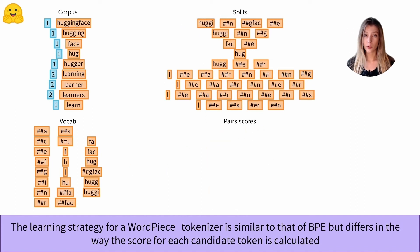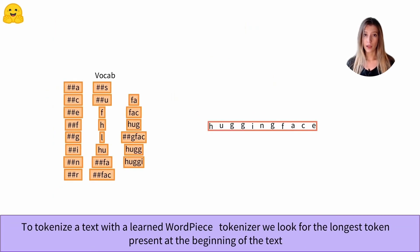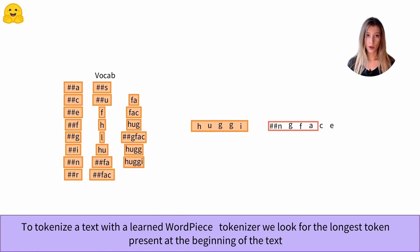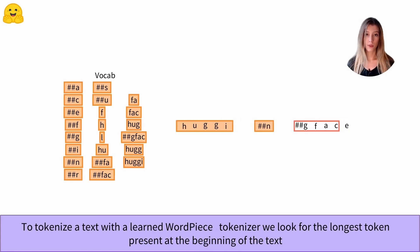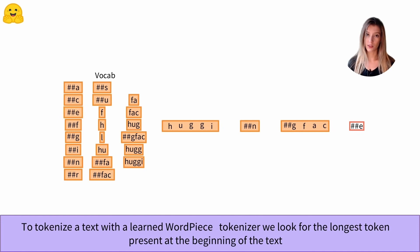Now that we are happy with our vocabulary, you are probably wondering how to use it to tokenize text. Let's say we want to tokenize the word 'agamface'. WordPiece follows these steps: we will look for the longest possible token at the beginning of our word, then start again on the remaining part, and so on until we reach the end. And that's it — 'agamface' is divided into four sub-tokens.